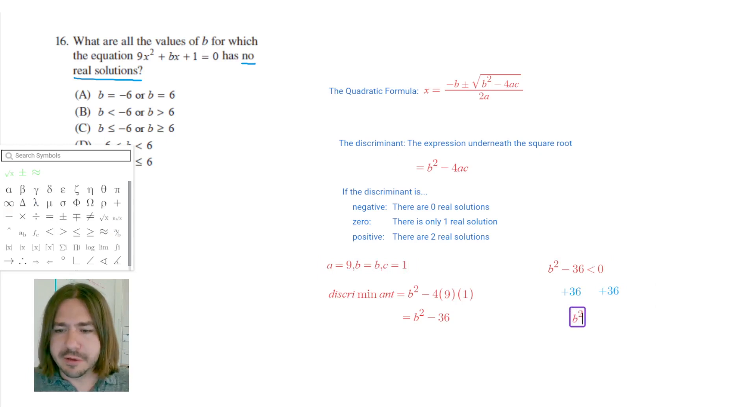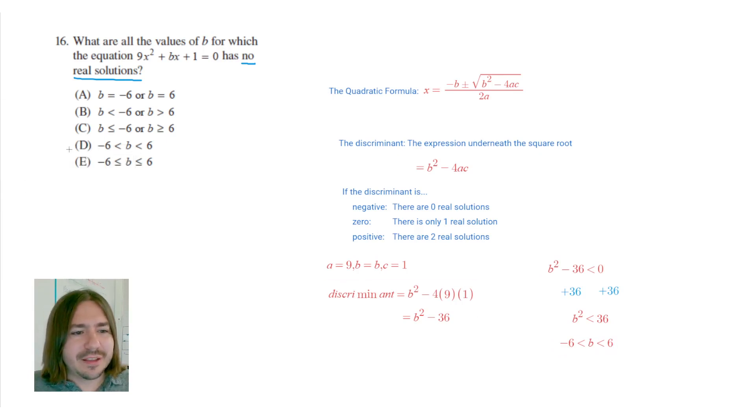So if b squared is less than 36, then that means that b is going to have to be in between negative 6 and 6. So that's our solution. And so we look at our answer choices and we see that it is choice D. And that's it for number 16. Thanks for watching. You all have a great day.